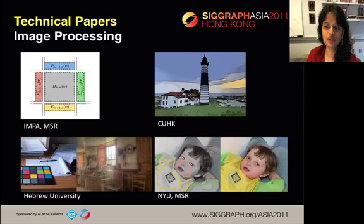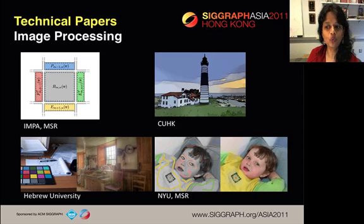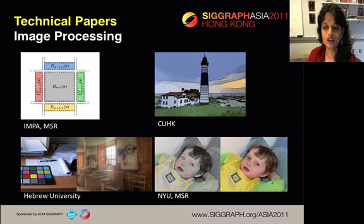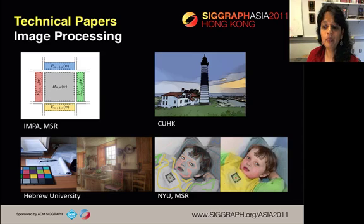In the Image Processing session, we have a paper that introduces GPU-efficient algorithms for summed area tables and filtering. An approach for image smoothing with edge sharpening that sharpens prominent edges while suppressing low-amplitude details. A new approach for rapidly approximating convolutions with large kernels that has many computational photography applications. And a paper that unifies multigrid and multilevel preconditioners, two widely used techniques in computational photography.